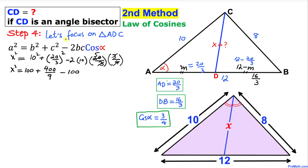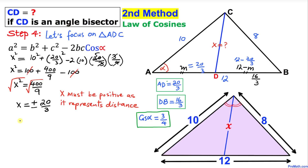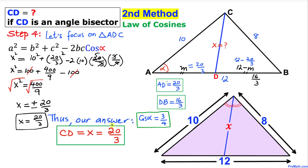We can see the positive 100 and negative 100 cancel out, leaving x² equals 400 over 9. Taking the square root of both sides, x equals positive 20 divided by 3. Since x must be positive, our final answer is x equals 20 divided by 3.